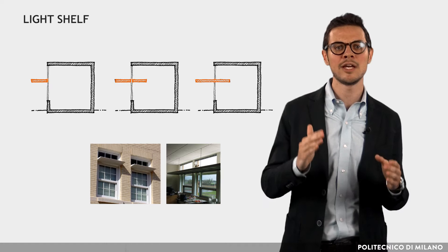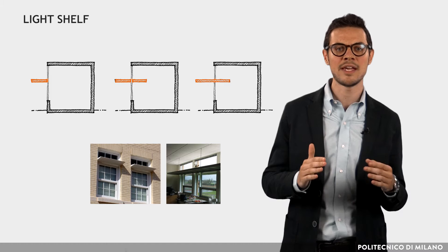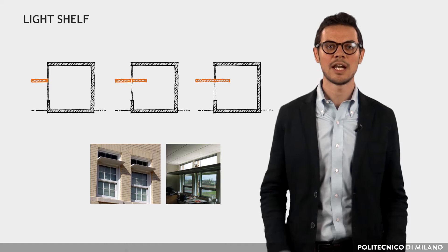The light shelf is generally made of a horizontal shape, arranged on the outside and/or inside of the windows in its upper part. The light shelf must be placed so as to avoid glare and maintain the view outside.